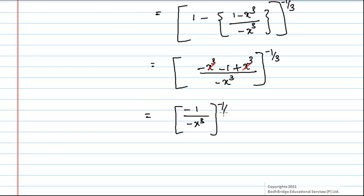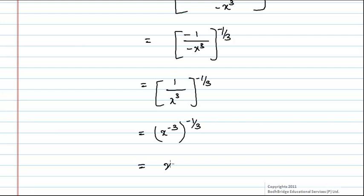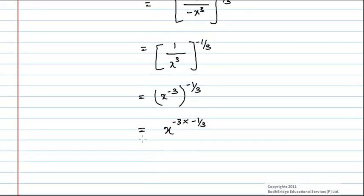Which is equal to 1 by x cube, the whole power minus 1 by 3. This we can write as x power minus 3, the whole power minus 1 by 3, which is equal to x power minus 3 into minus 1 by 3, which is equal to x power 1, and it is equal to x.